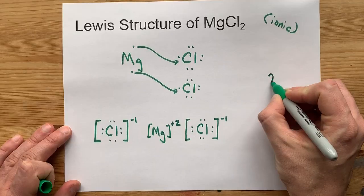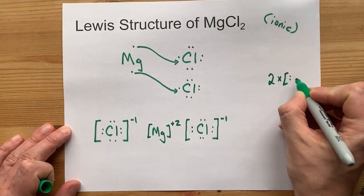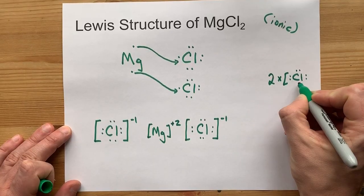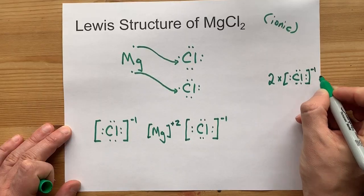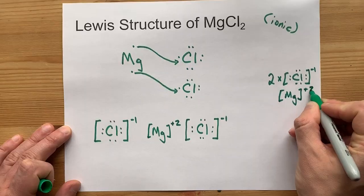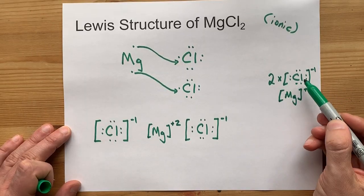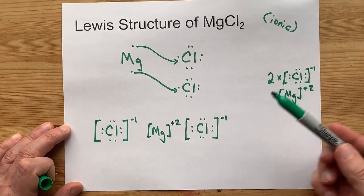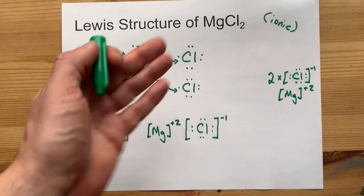Now you might be able to take a shortcut here and show that there are 2 chlorines. Gotta draw that out for every 1 magnesium. This just saves you from having to draw it out twice. Some teachers will accept that. Find out if it's allowed before you do it.